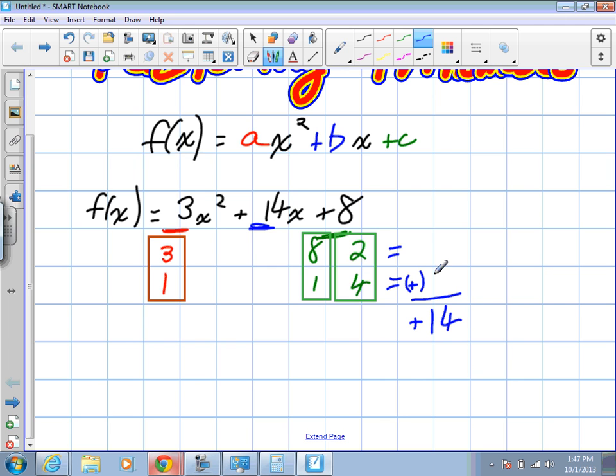So, by trial and error, we're going to try this out. I'm going to find what is 3 times 8 and 1 times 1. Okay. Is there any combination of 24 and 1 that equal 14? No. No. So we've gone directly across. We also have to test the diagonal.